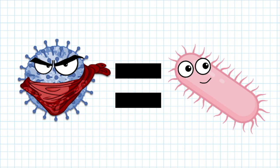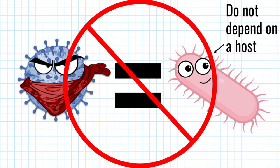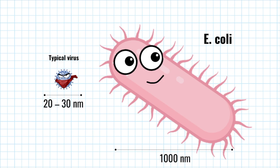Bacteria are small and single-celled, but they are living organisms which don't depend on a host cell to reproduce — they're able to do this on their own. Also, bacteria are so much larger than viruses. A typical virus has a diameter of about 20 to 30 nanometers, while an E. coli bacteria has a diameter of about 1000 nanometers, making bacteria almost giant-like in comparison.